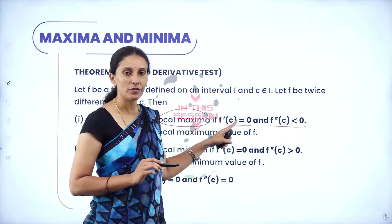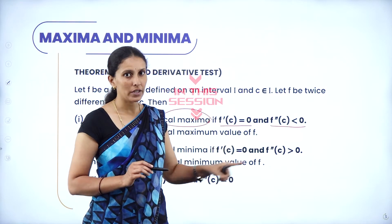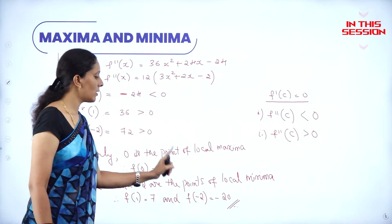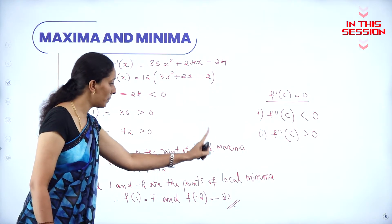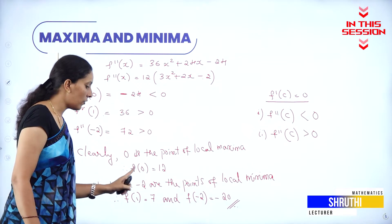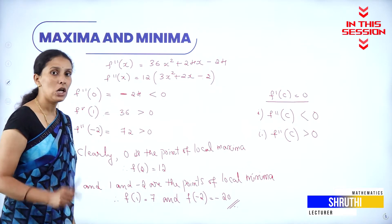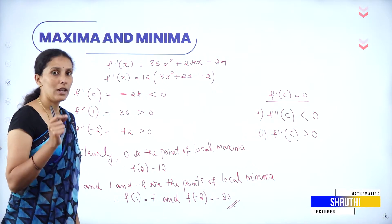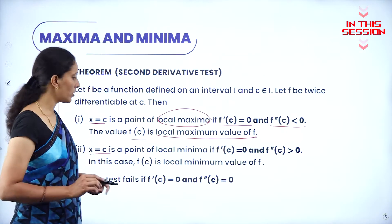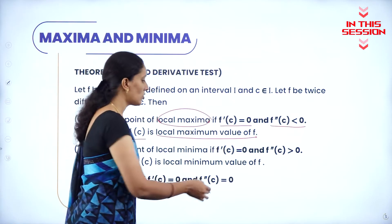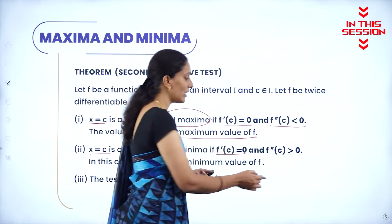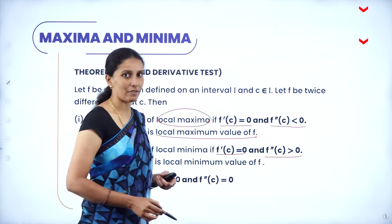When you substitute f'(c) = 0, you will get the critical point. x = 0 is the point of local maxima because its second order derivative is negative, so f(0) = 12 is the local maximum value. If x = c is the point of local minima such that f'(c) = 0 gives you the critical point and the second derivative is positive.